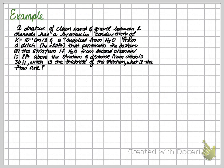So an example: imagine you have a stratum of clean sand and gravel between two channels that have a hydraulic conductivity of 10 to the negative first centimeters per second. It supplies water from a ditch 20 feet from the bottom of the stratum. If water from the second channel is 2 feet above the stratum, and the distance between the two ditches is 30 feet, which is the thickness of the stratum, what is the flow rate?